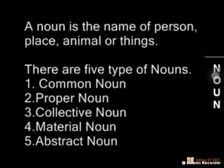How many types of nouns are there? Five types of nouns are there. They are: first, common noun; second, proper noun; third, collective noun; fourth, material noun; fifth, abstract noun. Today we are going to learn about common noun, proper noun and collective noun.